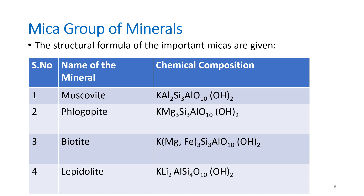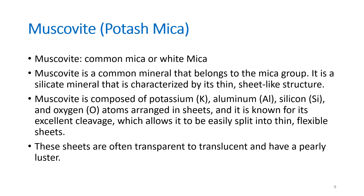Muscovite is also known as potash mica, common mica, or white mica because its color is almost colorless to white. It is a phyllosilicate mineral characterized by its sheet structure, composed of potassium, aluminum, silicon, and oxygen atoms arranged in sheets. This sheet structure is responsible for its excellent basal cleavage, allowing it to split easily into thin, flexible, transparent to translucent sheets with a pearly luster.